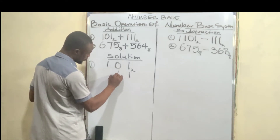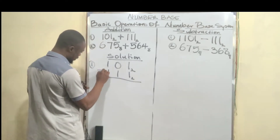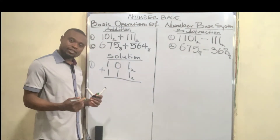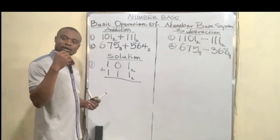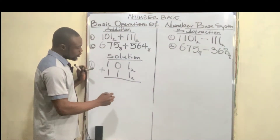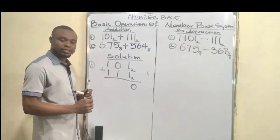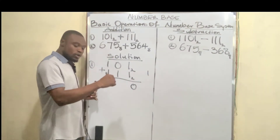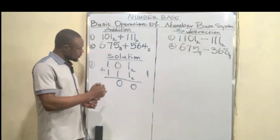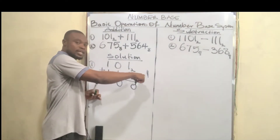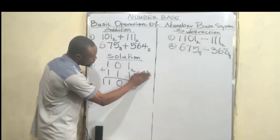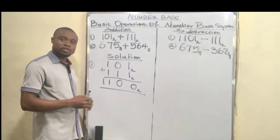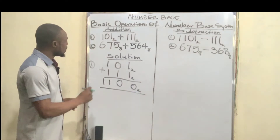We have 10101 base two and 11111 base two lined up and we add. One plus one is 10 in base two, so we write zero and carry one. Zero plus one is one, plus the carried one gives us 10 — write zero and carry one again. One plus one is 10, plus the carried one is 11 — write one and carry one. Continuing, our final answer is 110000 base two. Very simple.